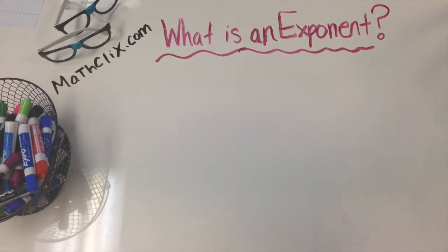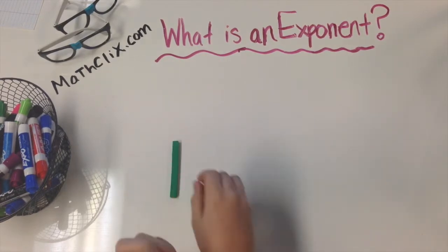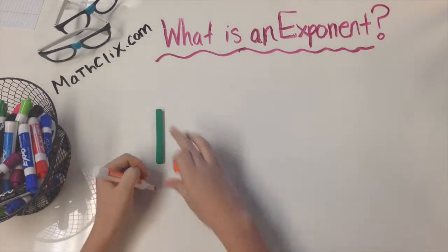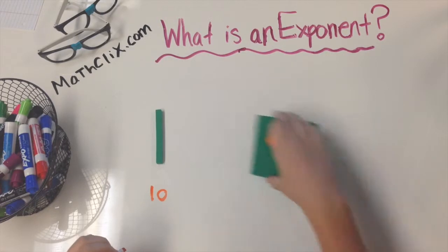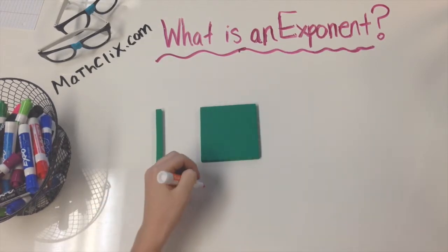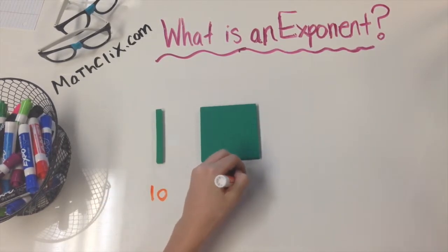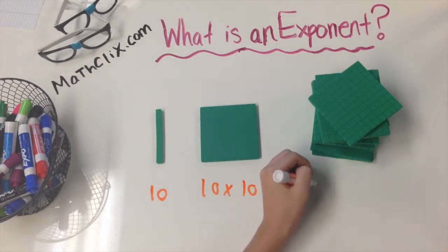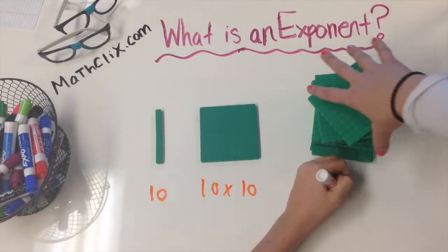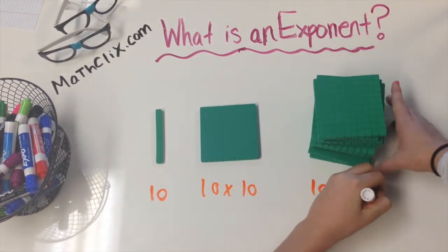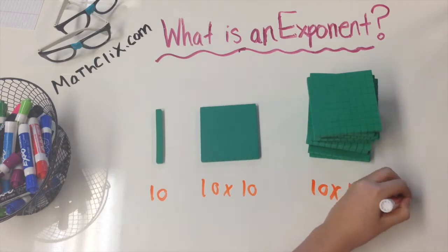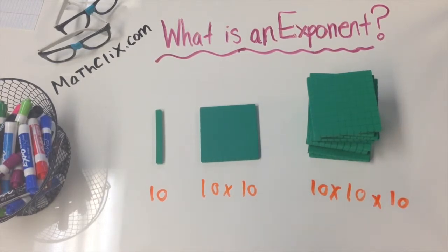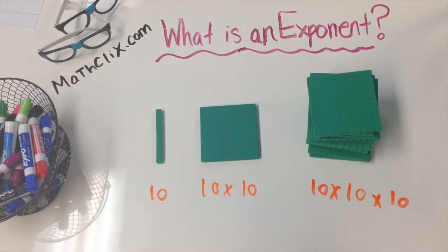Suppose you want to multiply ten by itself a bunch of times. This would be ten times ten. This would be ten times ten times ten. What if you wanted to continue this pattern? This expanded form would get really long.